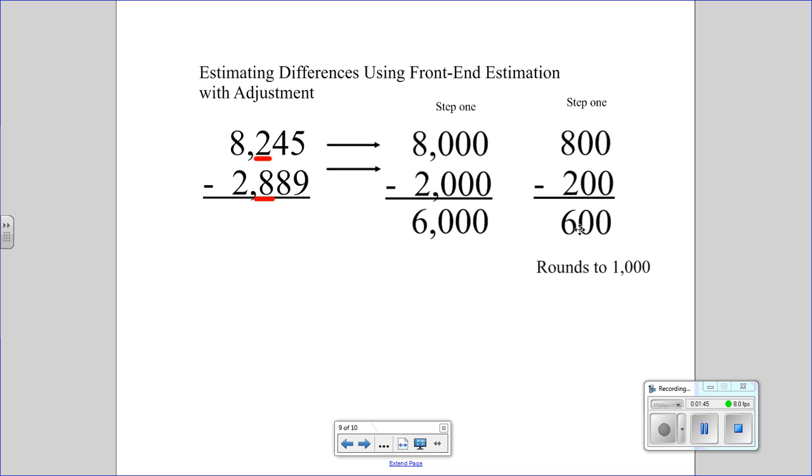But with this strategy, you really just have to take the bigger number, subtract the smaller number, and you get 600. So 600 is closer to 1,000 than it is to zero, so it's going to round to 1,000. So what we're going to do is we're going to do the 6,000 minus 1,000 and get around 5,000.